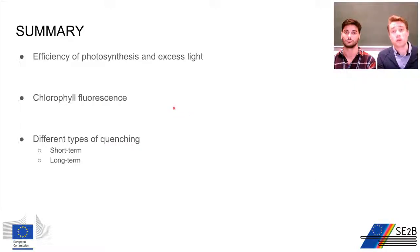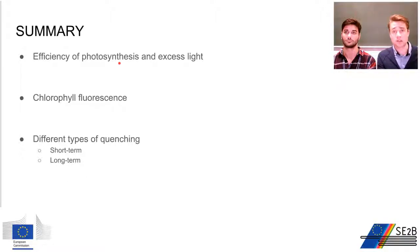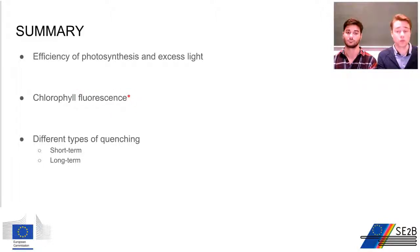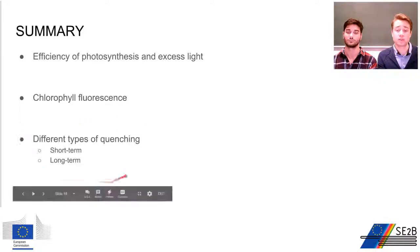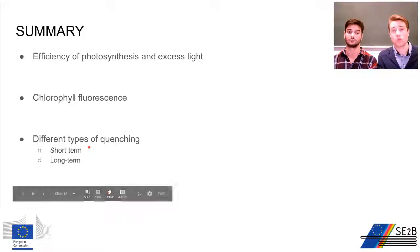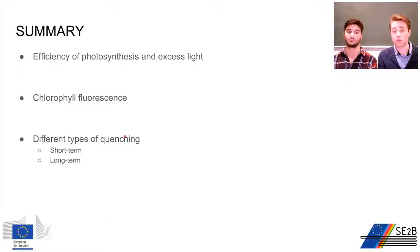In summary, in this video we looked at the efficiency of photosynthesis under excess light, and at chlorophyll fluorescence as a measurement tool for non-photochemical quenching. We also looked at different types of quenching, especially the short-term component. In the next video we will look at the longer-term components.